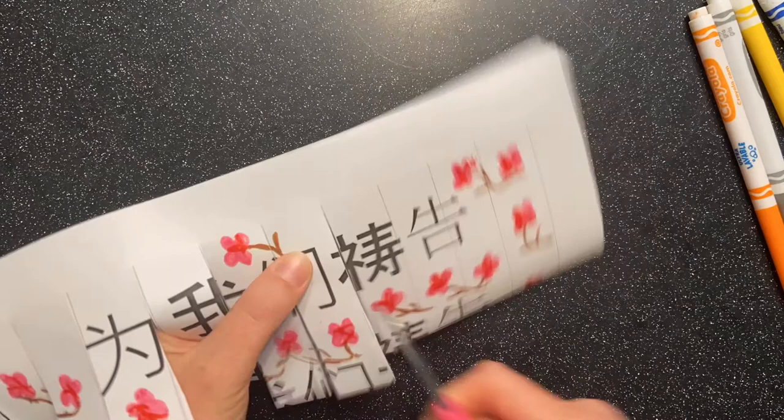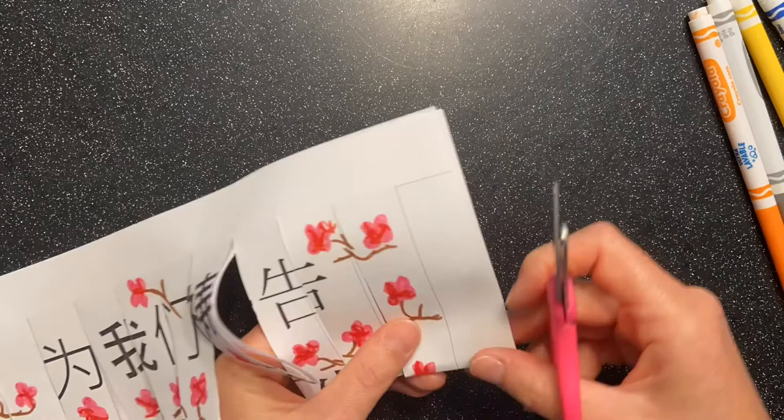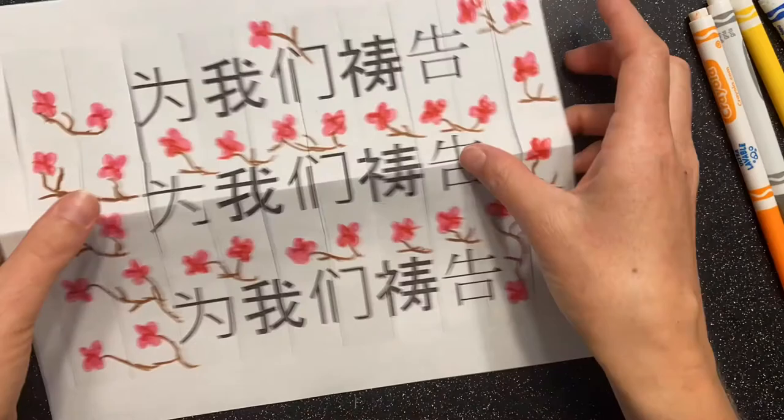When you come to the last line, you will cut this entire column out so that you have two tabs at the end of your paper. Once you are finished cutting, unfold your paper.